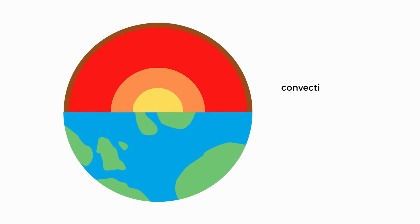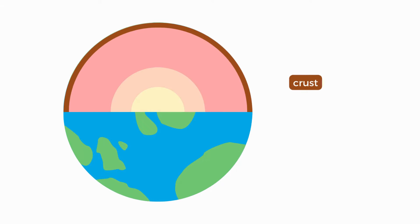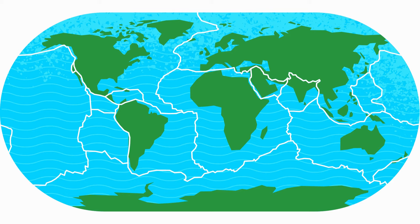Convection currents in the mantle. The earth's crust sits on top of the mantle and is divided into tectonic plates which have been slowly moving over millions of years. This is what we call the theory of plate tectonics.